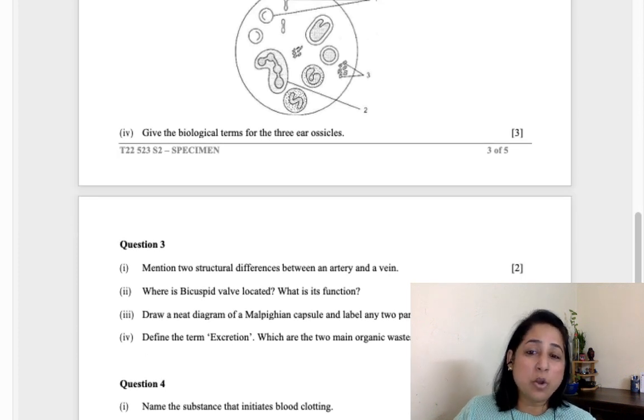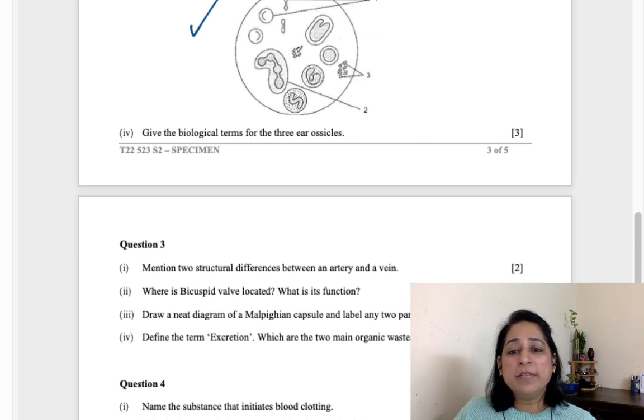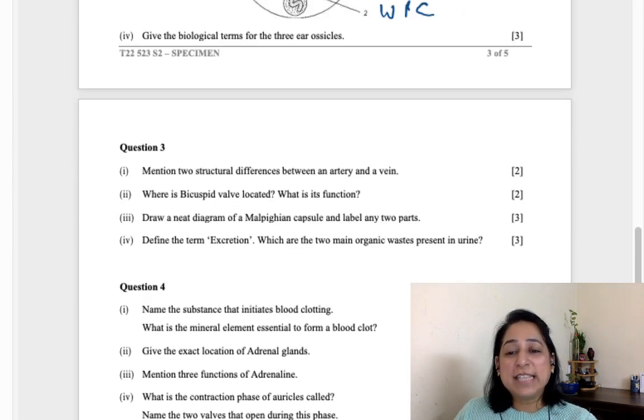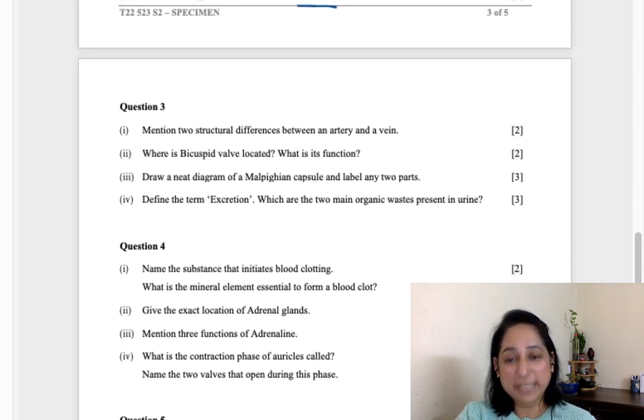Given below is the diagram of blood smear - it's a very common diagram, please do not miss this. Here we can see bi-concave, so these are RBCs. These are platelets, and this one is WBC as we can see the nuclei and there are lobed nuclei present here. Next is give the biological terms for three ear ossicles - those three small bones which are present in your ears. Hammer, anvil and stirrup, or you can say stapes, incus, malleus and stapes.